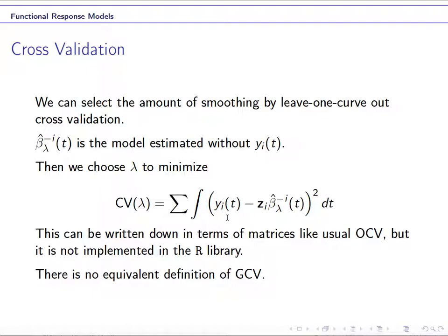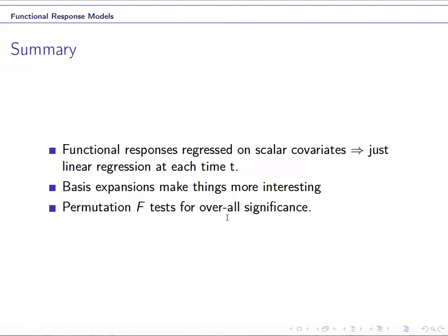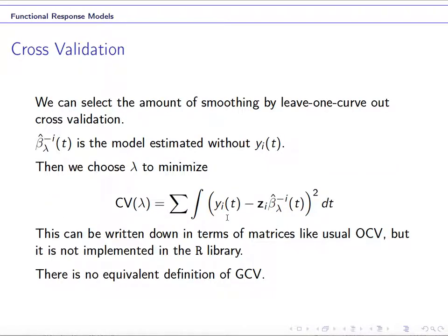So this is the general idea when you're choosing the smoothing parameters using cross-validations. So any questions? Okay, so let's go.